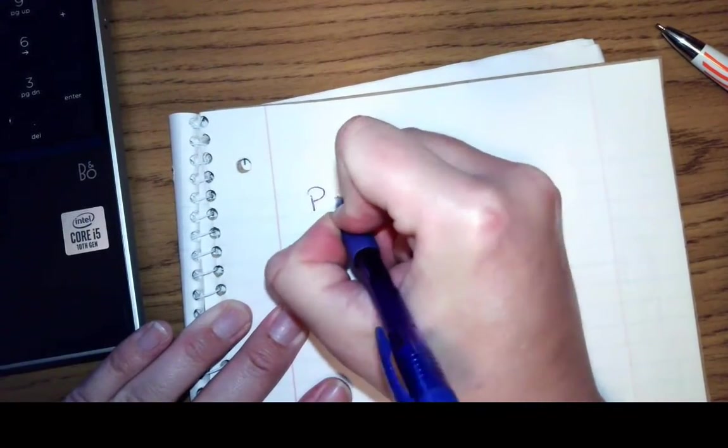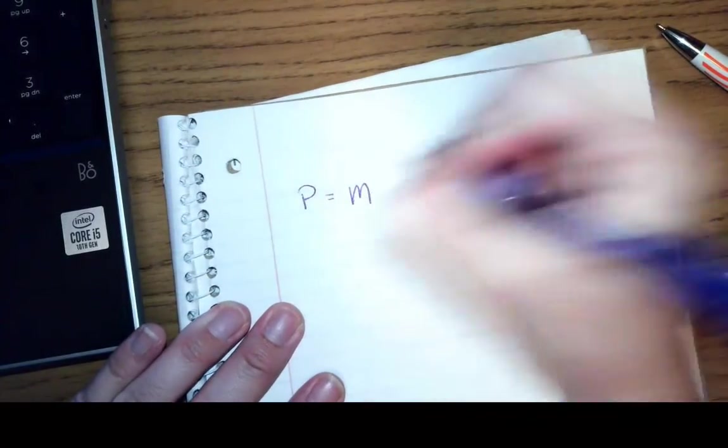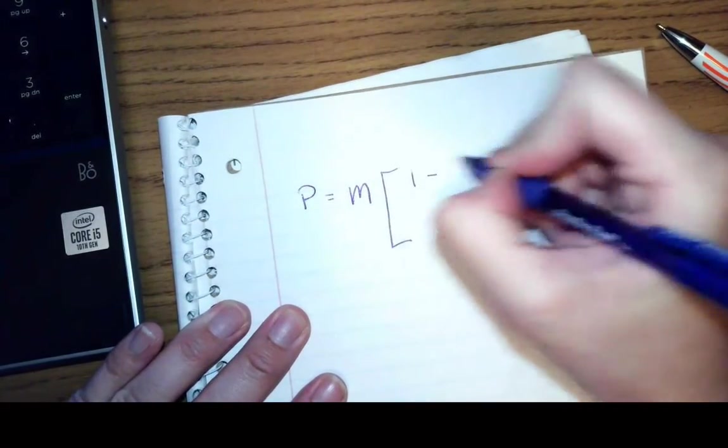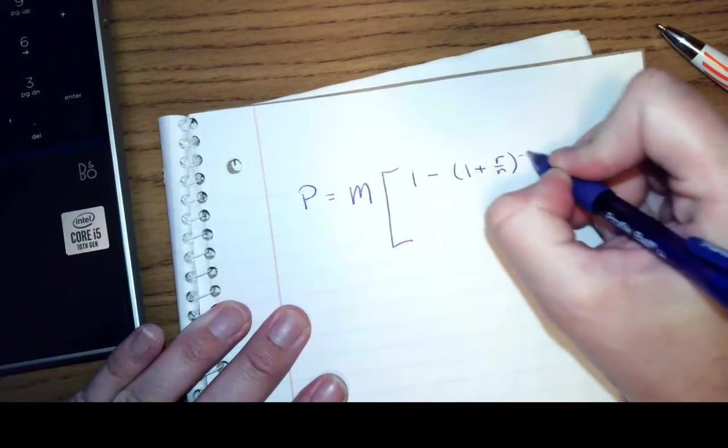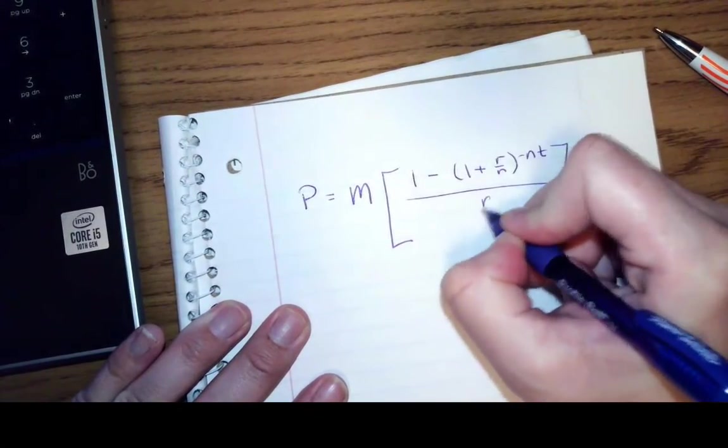So now we're going to deal with something called amortize or amortization. And all that means is that you're making regular payments to pay off a loan. So think about a mortgage. You would take out a certain amount and then you'd have to pay monthly installments until that mortgage is paid off. It's going to be the exact same thing as an ordinary annuity. So I have the present value is the money I pay regularly times 1 minus 1 plus R over N raised to the negative NT all over R over N.